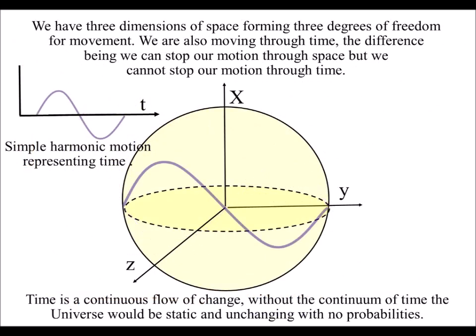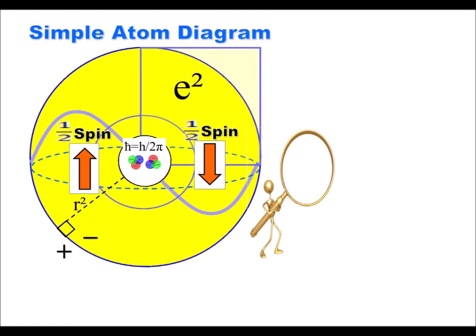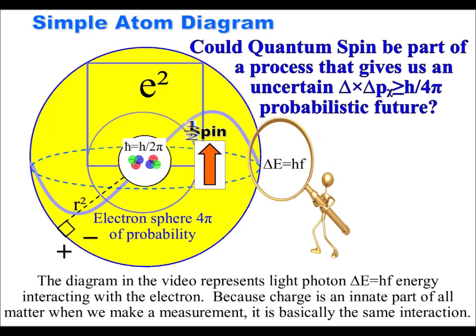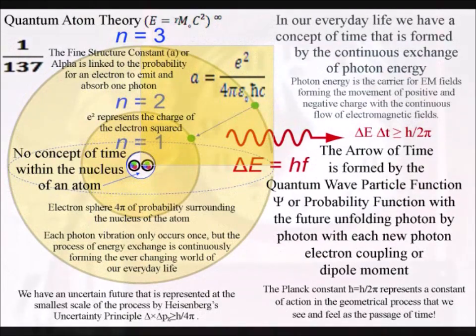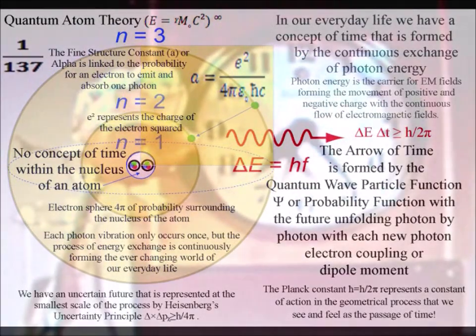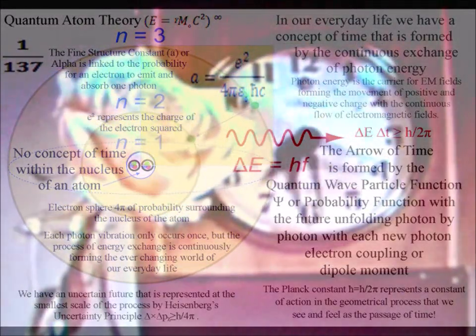The spontaneous absorption and emission of light is forming an interactive process with the atoms of the periodic table. We experience this as the continuum of time with an emergent, probabilistic, uncertain future.